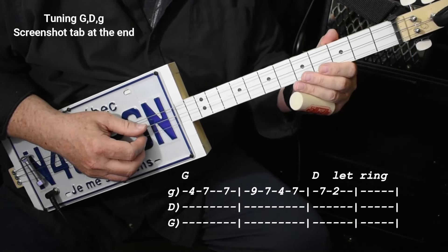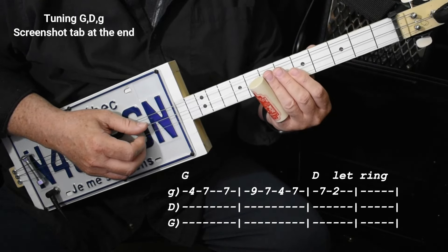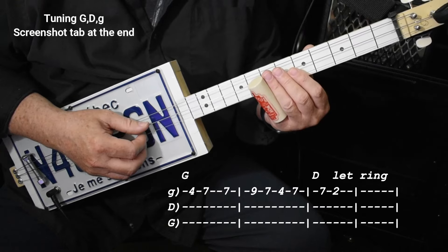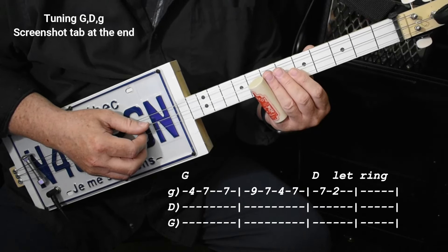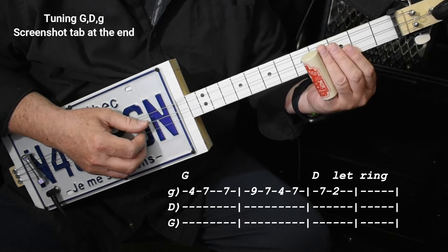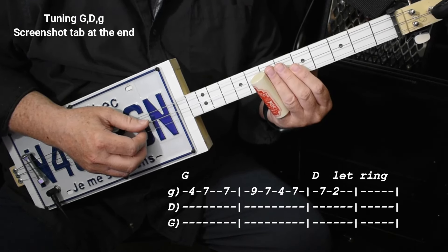Okay, line two. This is 4-7 - there's a little pause on the second note of each of these measures, by the way. Okay, and then 7-9-7, 4-7, and then 7-2.